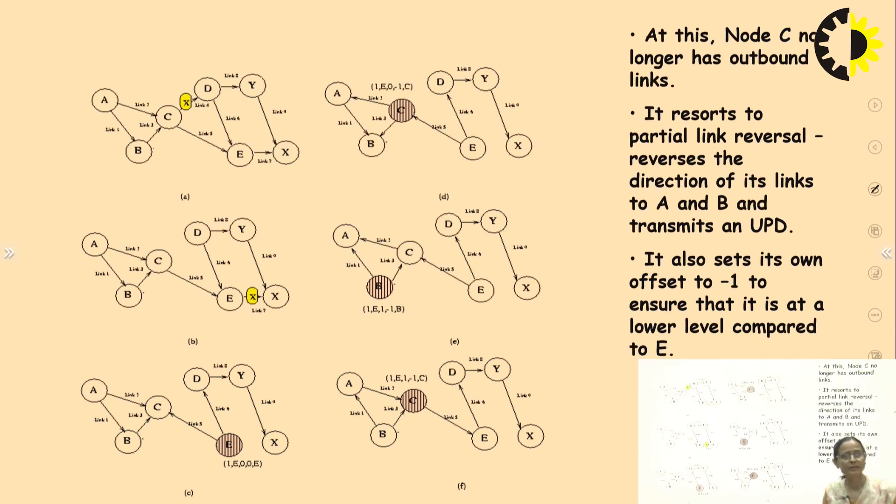At this point, node C no longer has the outbound link. It resorts to partial link reversal. It reverses the direction of its links to A and B and transmits an UPD. It also sets its own offset to minus 1 to ensure that it is at a lower level as compared to E.